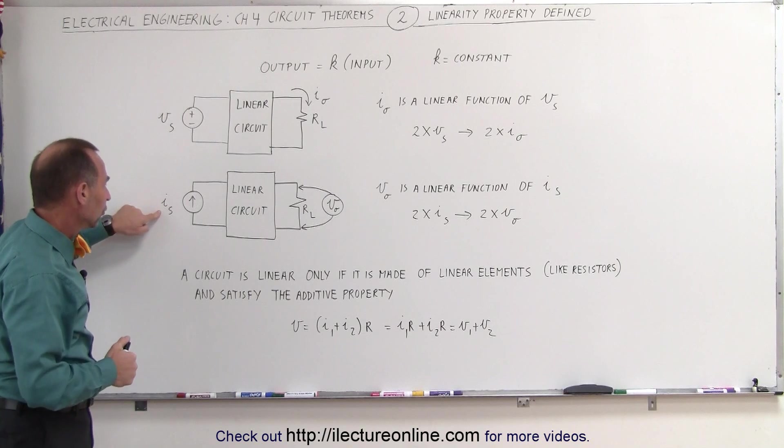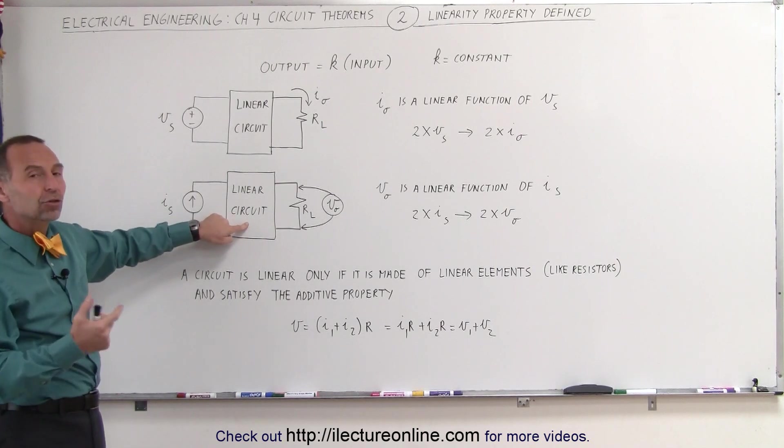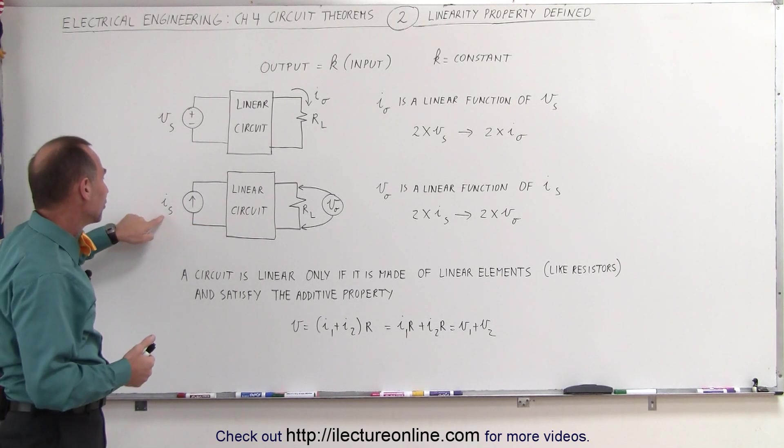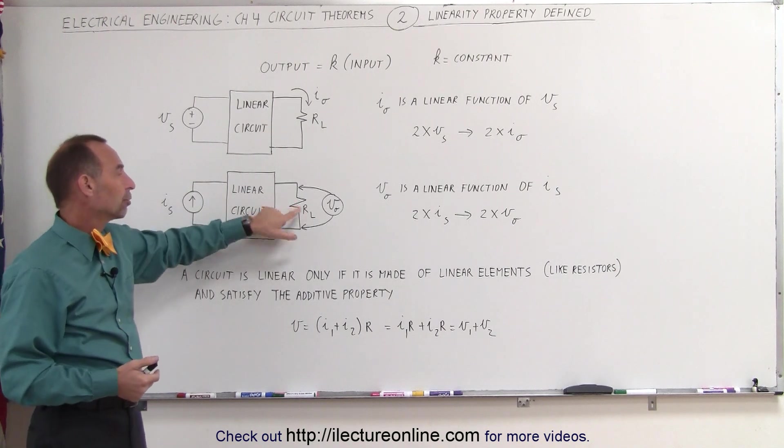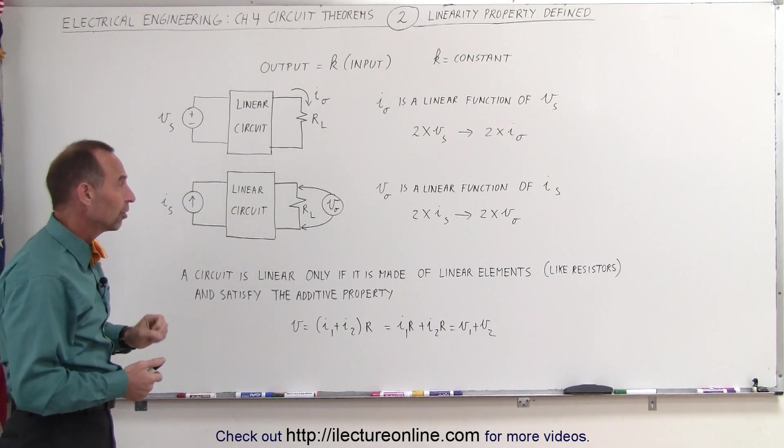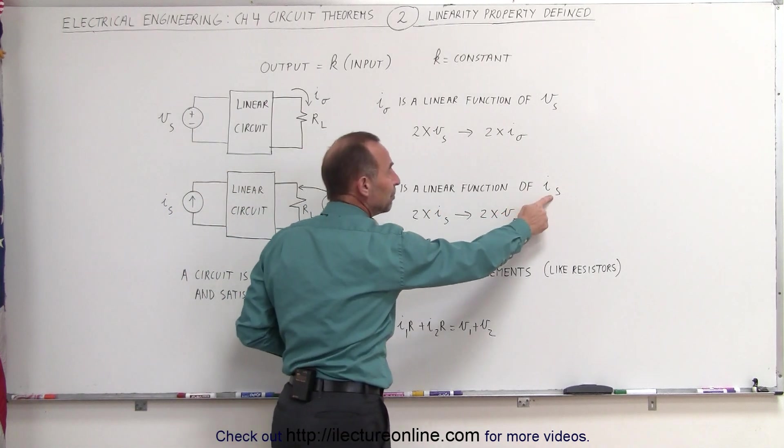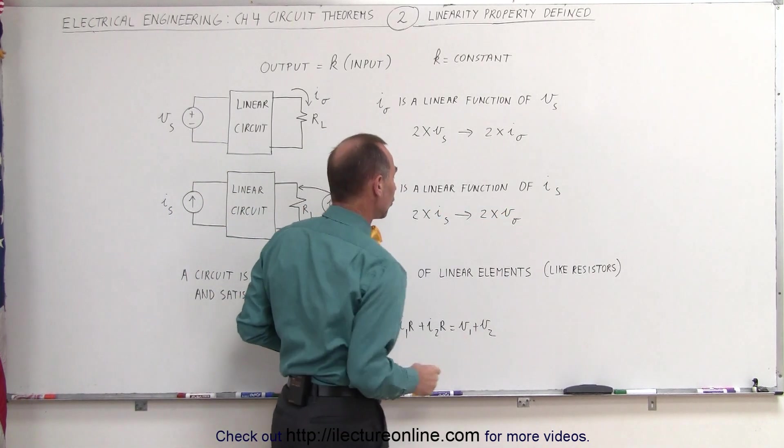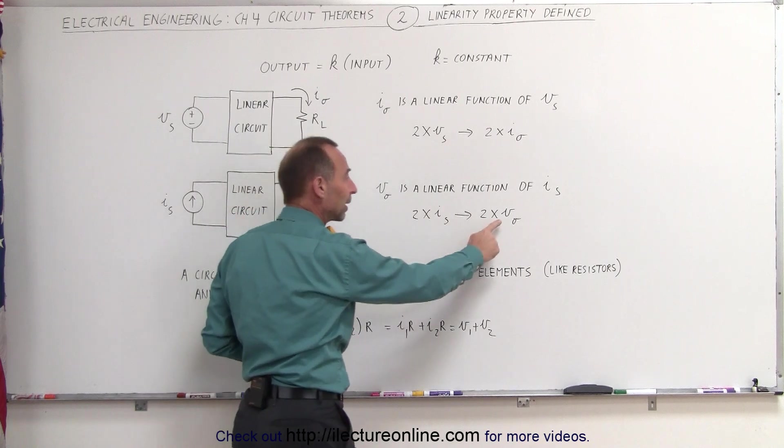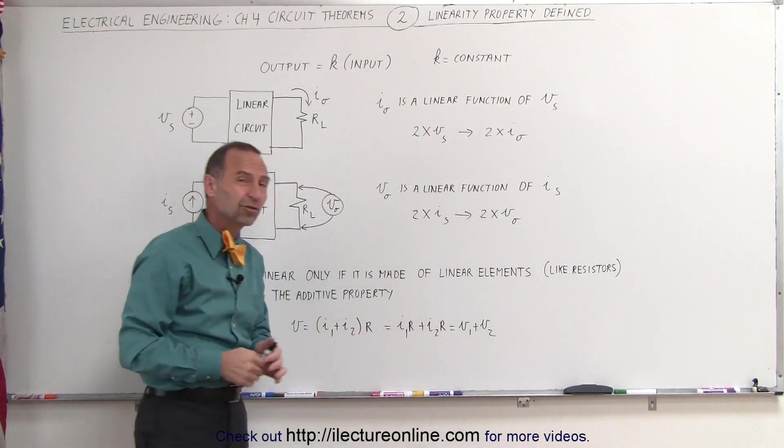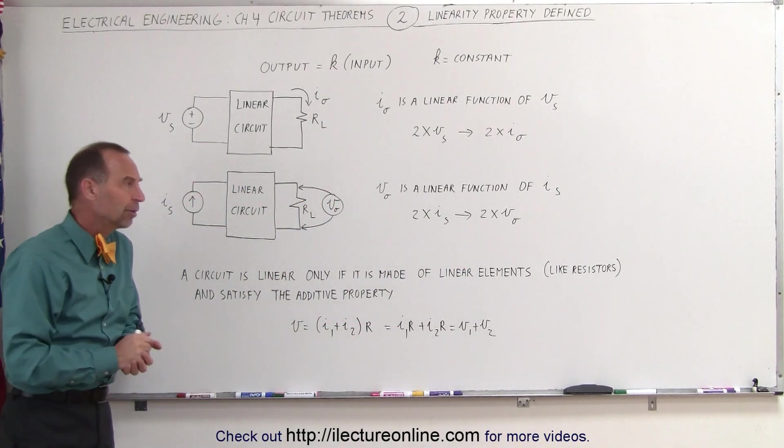In the case of a current source with a linear circuit attached to it, if you double the current, you expect double the voltage across the load resistance. The voltage on the output is a linear function of the input current. If we double the current, we expect double the output voltage. Triple the current, triple the voltage, and so forth.